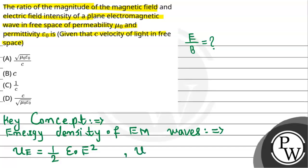And energy density for magnetic field is equals to one-half B squared divided by mu naught. In this case, the energy density of electric field is equal to the energy density of magnetic field.